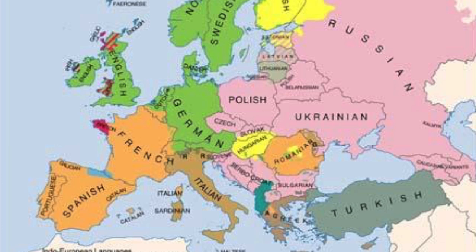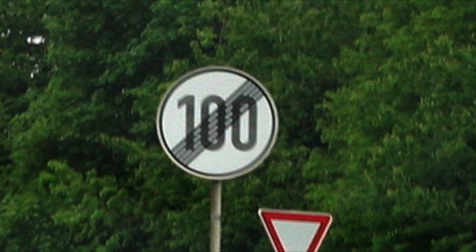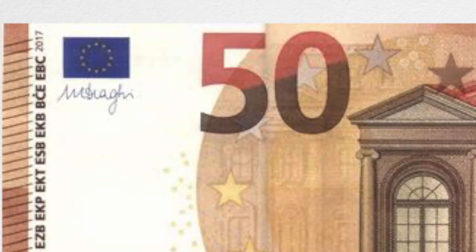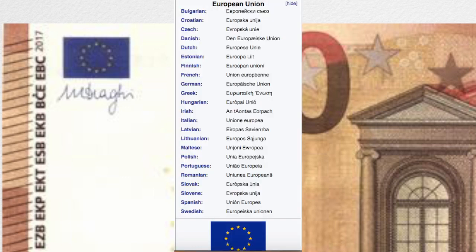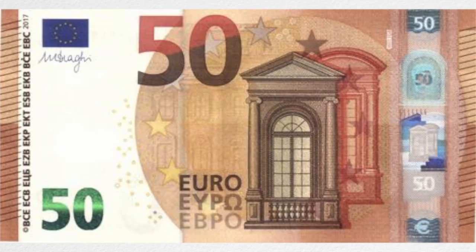Europe is also full of languages, which is why there aren't many words on the Euro, or on European street signs. So unlike American money, which has a big banner saying "United States of America" across it, there's just a flag of the European Union — no "European Union" or anything like that — because it would have to be repeated in 20 languages. And those languages often use different scripts, the main ones being Latin, Greek, and Cyrillic. Very short list, no reason to exclude anyone.